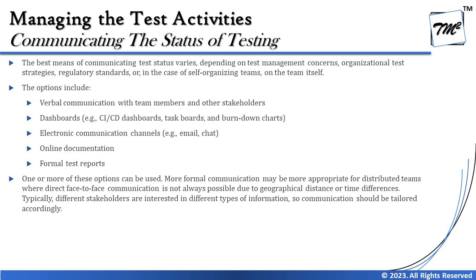More formal communication may be more appropriate for distributed teams where direct face-to-face communication is not always possible due to geographical distribution or time differences. Different stakeholders are interested in different types of information, so communication should be tailored accordingly. When working with a distributed team, written communication becomes critical — a high-level input that's easy to understand in person may not be sufficient remotely. That's all for test monitoring, control, completion, and the different test reports. Keep learning, keep exploring — thanks for watching.